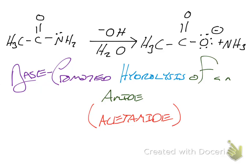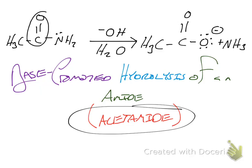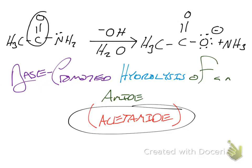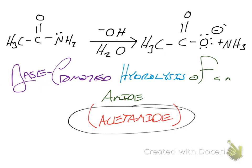Today I would like to talk about the base-promoted hydrolysis of an amide. The amide we will be using is acetamide, a very simple amide. We have our carbonyl group in the middle, just a methyl on one side, and an NH2 on the other. This is just like acetone where the CH3 on one side is replaced by an NH2. We'll be reacting this with hydroxide in water, producing a negatively charged oxygen where the NH2 was, and neutral NH3 in solution.